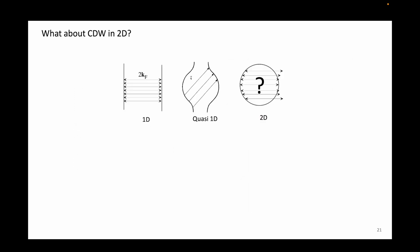The partial nesting picture somewhat works in quasi-1D, but what about 2D? Well, the simplest depiction of a Fermi surface of a 2D material is a cylinder. In a cylinder, there are hardly any Fermi vectors that can nest. So, will we ever see charge density waves in 2D materials? The answer is yes.